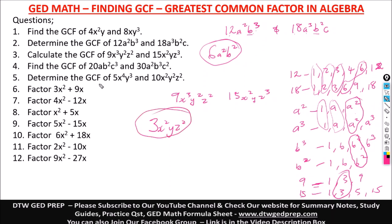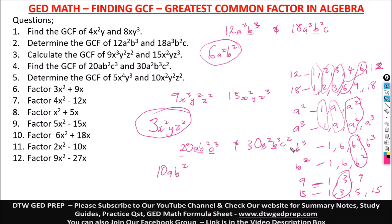Number four: GCF of 20ab²c³ and 30a²b³c². For the numbers 20 and 30, the greatest common factor is 10. For the variables: a and a² share a; b² and b³ share b²; c³ and c² share c². So the GCF is 10ab²c².